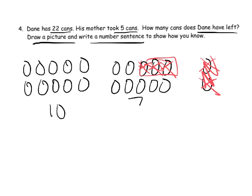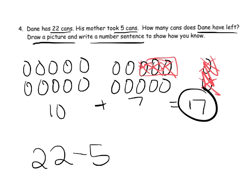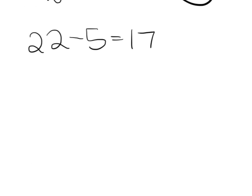We definitely know that the answer is 17. The number sentence would be 22 minus 5 equals 17. And if we wanted to, we could use the number bond to show that.